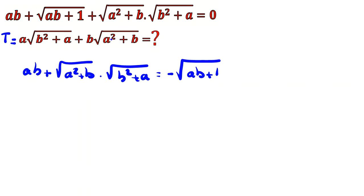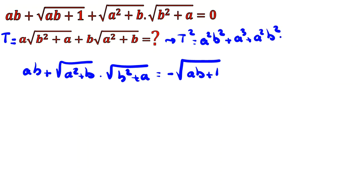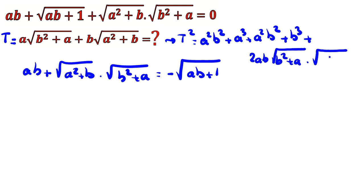I notice this is a product, so let's also consider t². t² expands to: a²b² + a³ + b³ + 2ab · (b² + a)(a² + b).